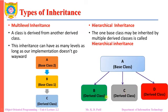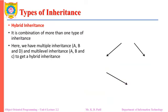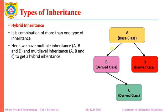Hierarchical inheritance: when there is one base class but that base class is inherited by multiple derived classes, it is referred to as hierarchical inheritance. For example, class A is the single base class, and class B, class C, and class D are different derived classes all inheriting properties from class A — one base class with multiple derived classes.